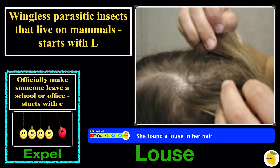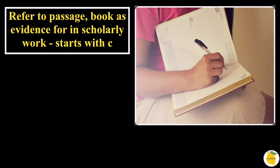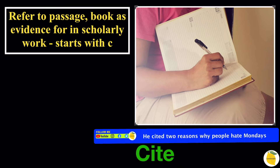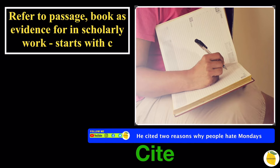Refer to a passage or book as evidence for use in scholarly work — starts with C. In this picture we can see someone writing in their diary, and the word is going to be 'cite'. The sentence is: he cited two reasons why people hate Mondays.